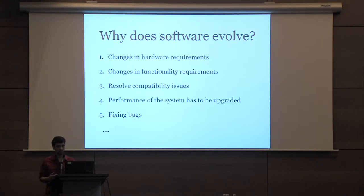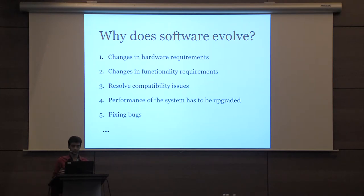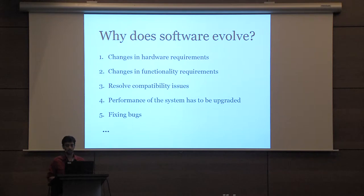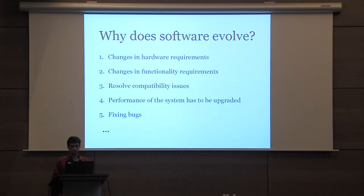So why does software evolve? There are many reasons. For instance, the hardware requirements can change over time. There could be changes in the functionality requirements — you want to add more features to the software, change the GUI, and so on. Another reason is to resolve compatibility issues — you want to make sure your software is compatible with the latest version of the operating system. And another reason could be that you want to fix some bugs in the software.